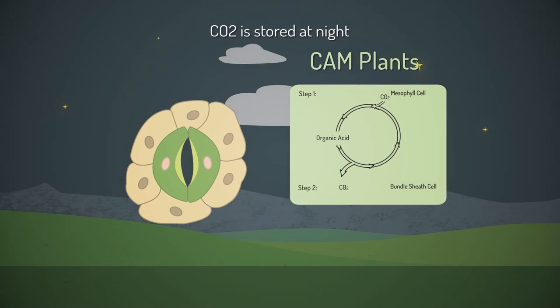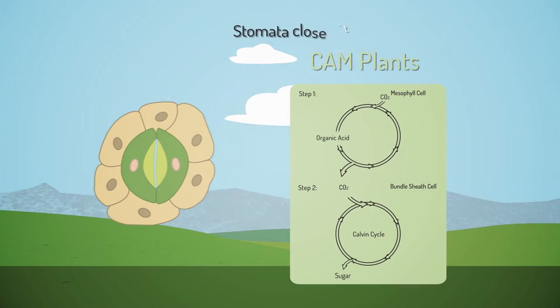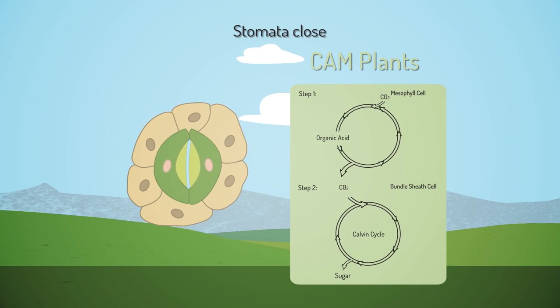But when the sun is shining brightly, the stomata are closed. This way, the plant is able to conserve water and obtain CO2 at night. In the morning, CO2 is released from the vacuoles and available for use in the Calvin cycle.